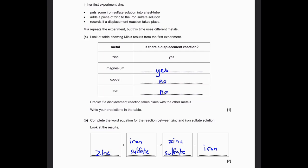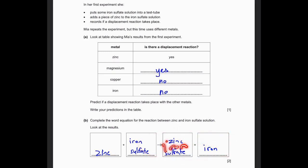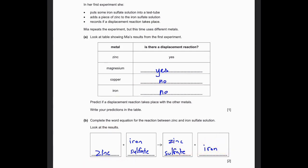Complete the word equation for the reaction between zinc and iron sulfate solution. Zinc plus iron sulfate are the reactants. Because zinc has higher reactivity, it displaces iron from the solution. Zinc goes into the place of iron and iron is displaced. The products are zinc sulfate plus iron. So the complete word equation is: zinc + iron sulfate → iron + zinc sulfate.